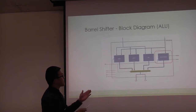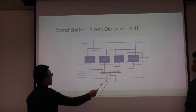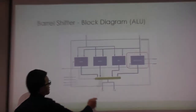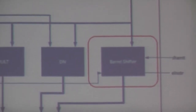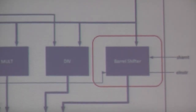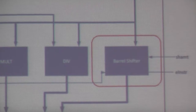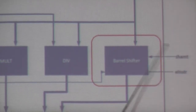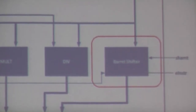Looking at the same diagram, the barrel shifter receives function select, shift amount, and the enhanced instruction signal. If the instruction is a rotate left or rotate right, the function select values are 0x0 and 0x0 respectively, which is why function select must feed into the barrel shifter.